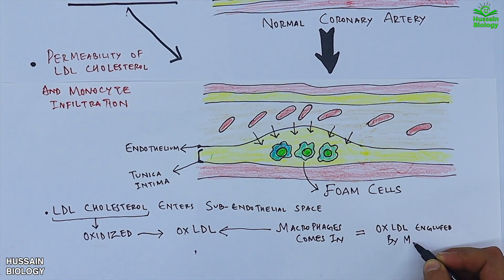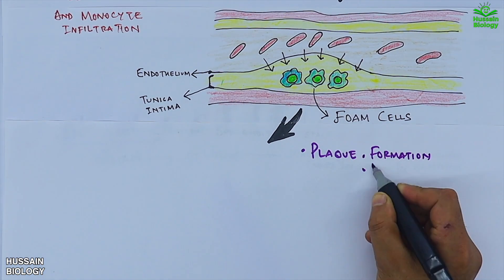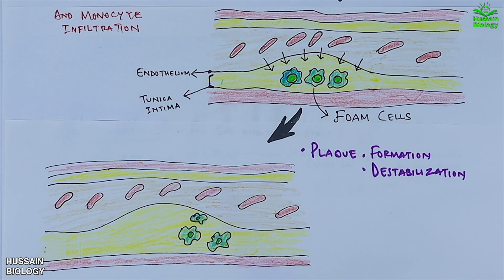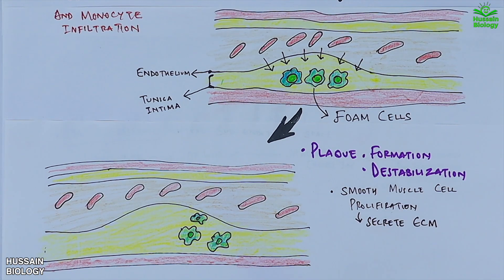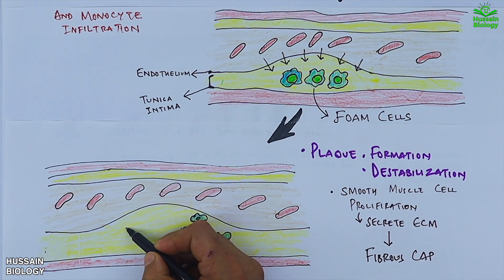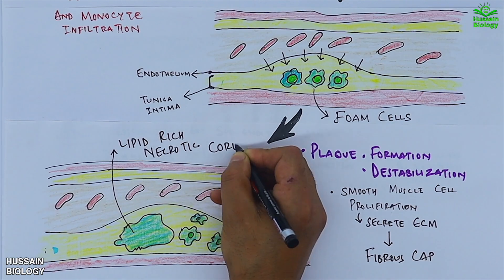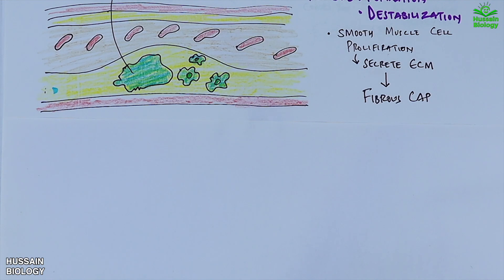Then we have plaque formation and destabilization. As this process continues, smooth muscle cells from the vessel wall start to proliferate and secrete extracellular matrix. This ECM helps form a fibrous cap over the lipid-rich core of the plaque. A necrotic lipid-rich core also forms, as shown in the diagram, made up of dead cells and fatty material. This core makes the plaque vulnerable to rupture, especially if the fibrous cap is thin or weak.